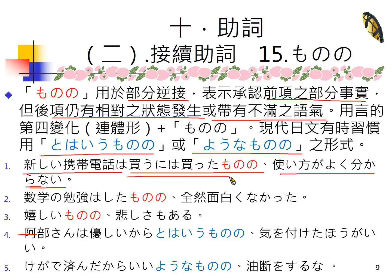例句：新しいスマホは買ったものの使い方がわからない。新的手机啦，买了是有买了，但是呢它的使用方法不太清楚，这种智慧型手机，一般上了年纪的人，它承认前项的部分事实「买了是买了」，但后项有相对的状态——就不会用，也实在有点可惜，但没办法就是这样子。第二个例句：数学は勉強したものの面白くない。数学虽然念，有念了啦，但是呢却感觉一点都不有趣。